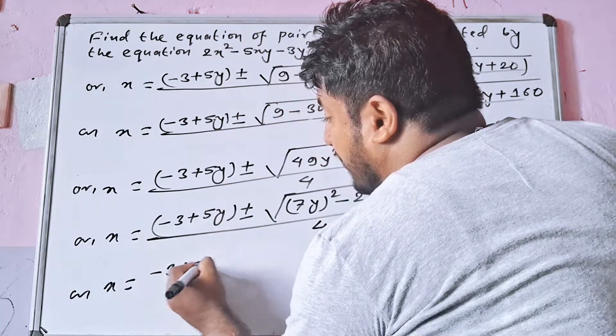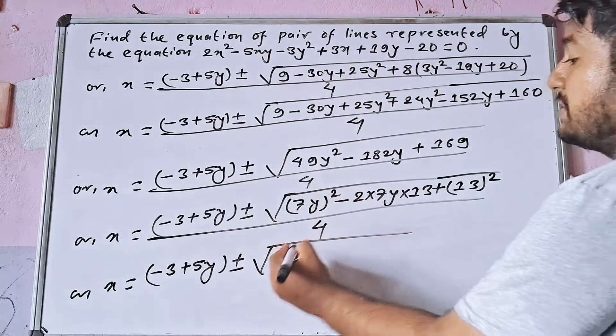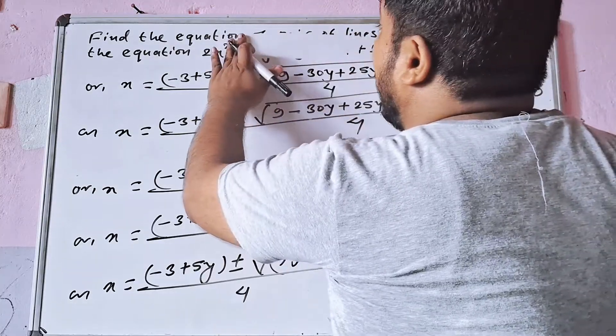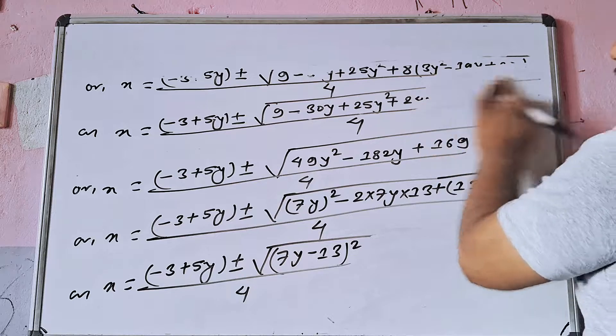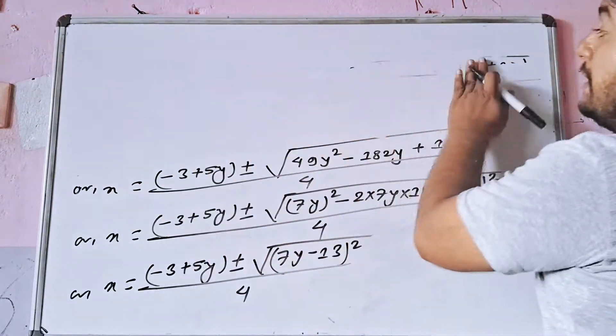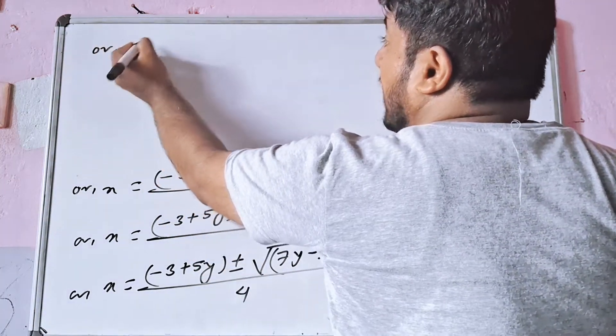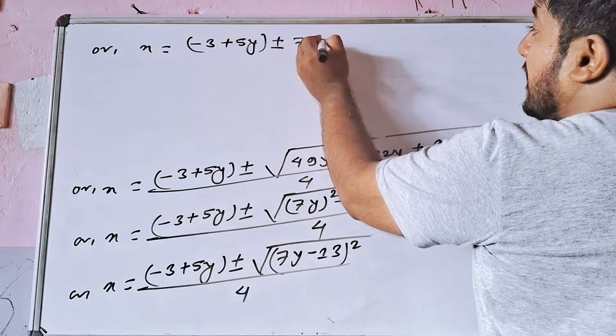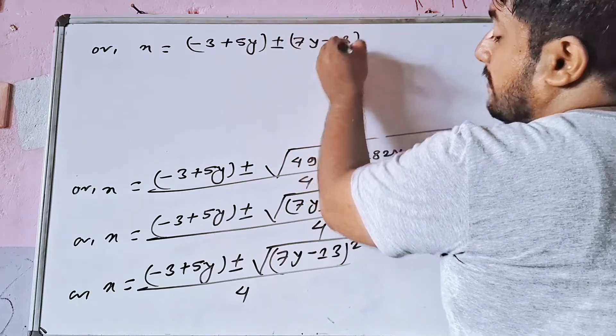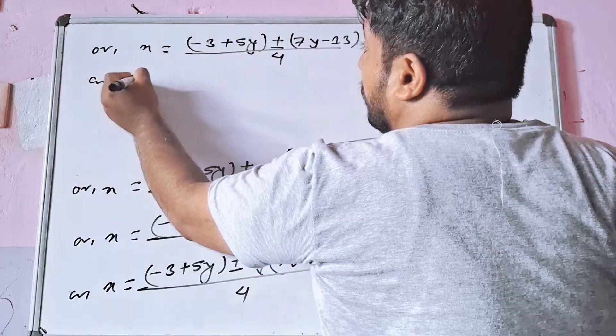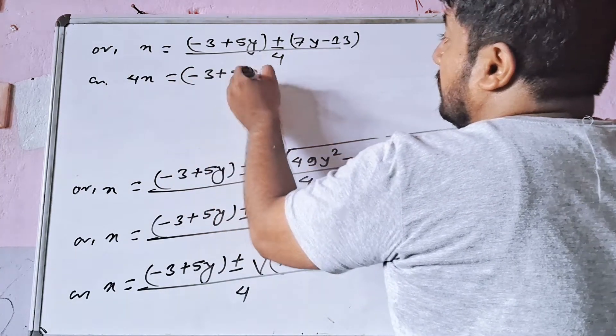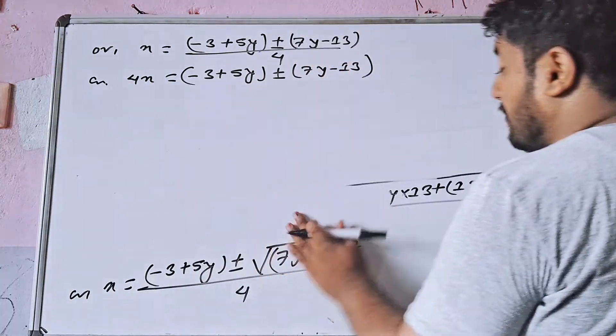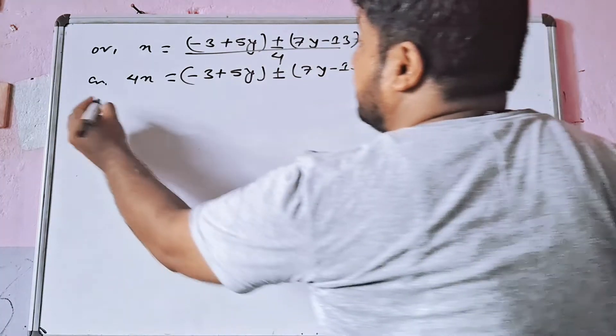x is equal to minus 3 plus 5y plus minus 7y minus 13, divided by 4. Taking the positive square root and the negative square root gives us two solutions.